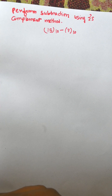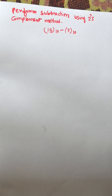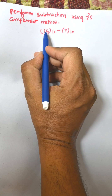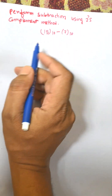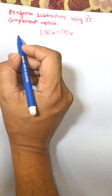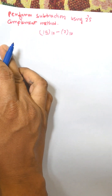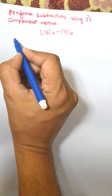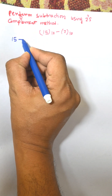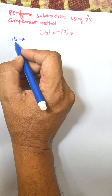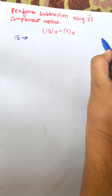In this video I am going to discuss 2's complement subtraction. The number is 15 minus 7. Here we need to use an 8-bit register. 15 is a positive number so we need to perform the binary of that number.